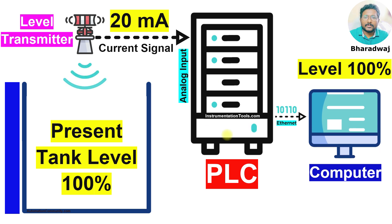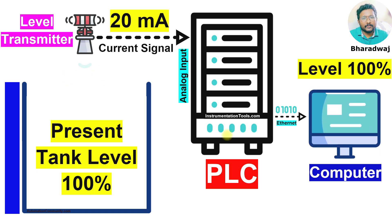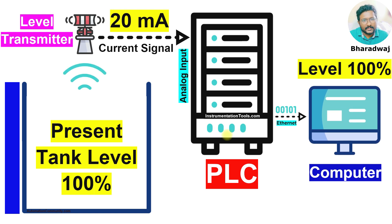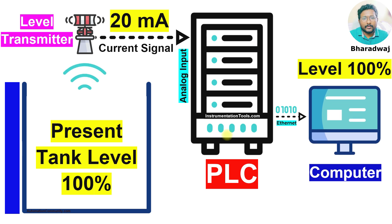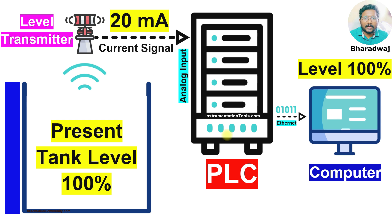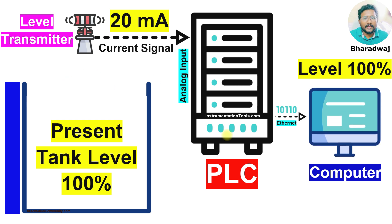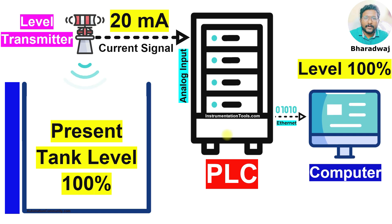Remember, in this course our main focus is on 4 to 20 mA signals. We are not going to discuss how the PLC calculates these values or how it updates them on the graphics, as those are different topics.